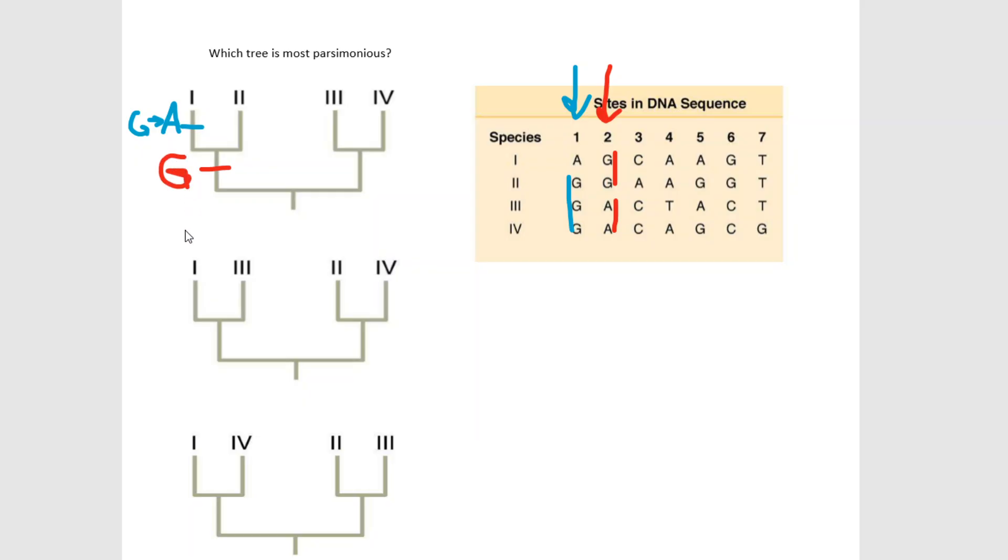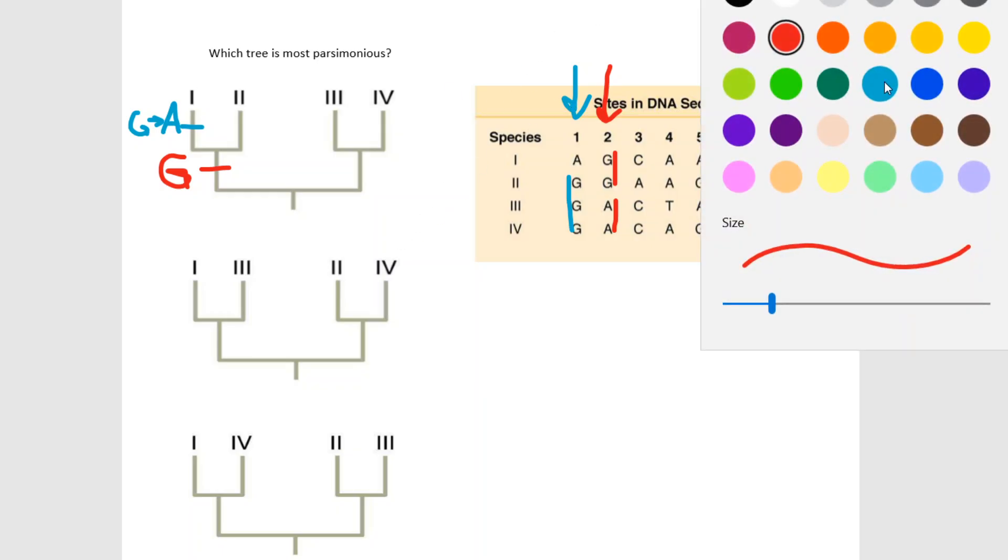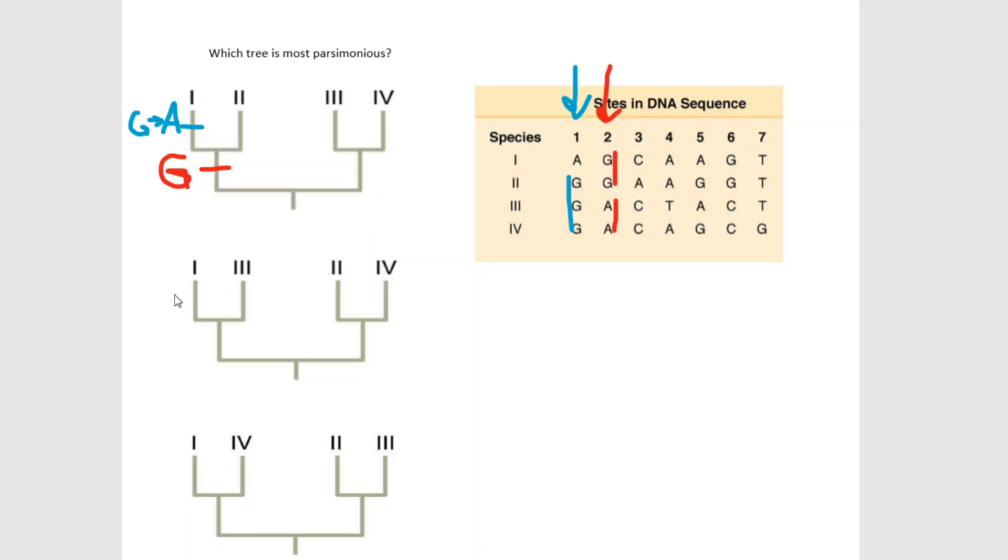Now this is one that I want to map on the other trees as well, just to show you where this would go on the other trees. So for this G to A that we saw in site 1, that's going to be the same for all of them. And I can just put those on with little tick marks here. So 1 is always going to have a G to A relative to the rest of the tree.